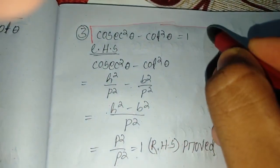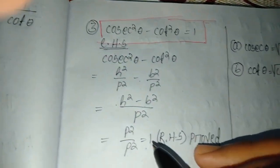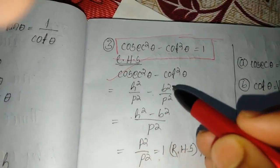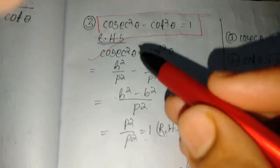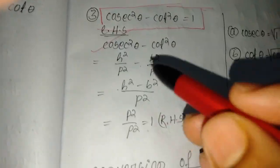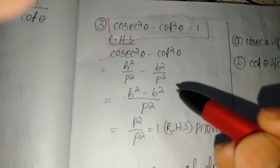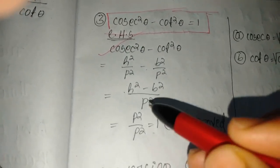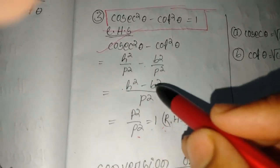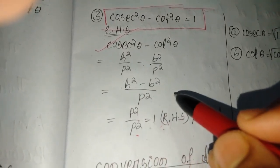The third relation is cosec²θ − cot²θ = 1. LHS: (H/P)² − (B/P)² = (H² − B²) / P². According to Pythagoras, H² − B² = P², so P²/P² = 1. Proved.